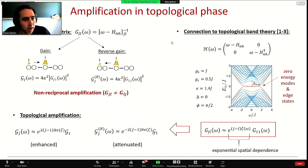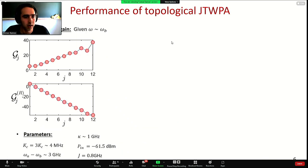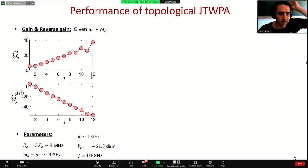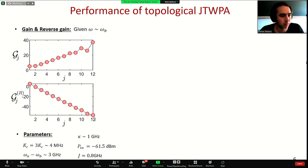I now want to show how this performs with realistic superconducting circuit parameters. Here I show the gain and the reverse gain for amplifying a signal at a frequency close to the pump. The gain increases nearly exponentially from left to right as a function of the number of sites: already for 12 sites we can reach almost 40 dB of amplification, and the attenuation is also exponentially suppressed to less than minus 40 dB.